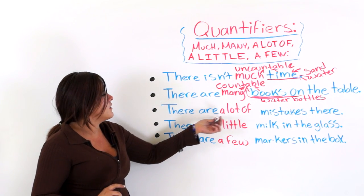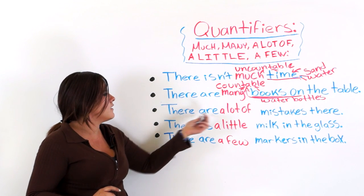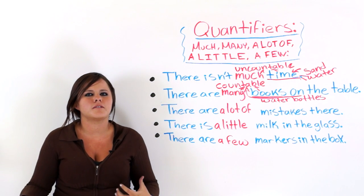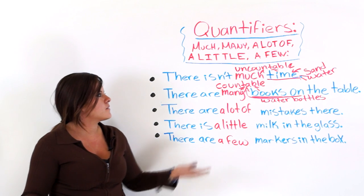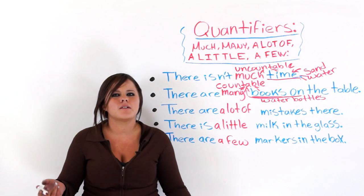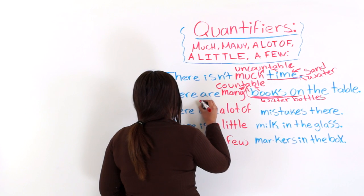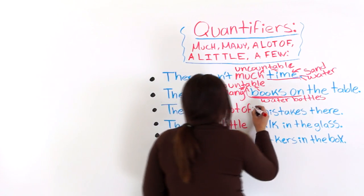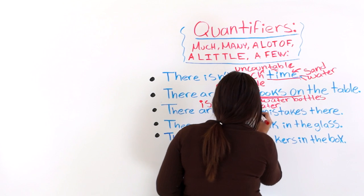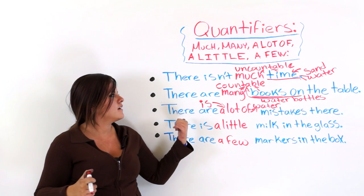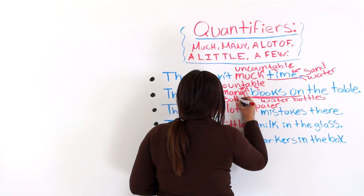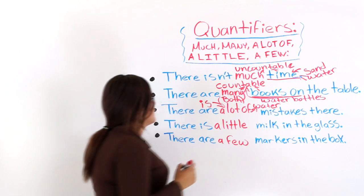There are a lot of mistakes there. A lot of is for both countable and uncountable nouns. You can say there are a lot of water bottles, or there is a lot of water. When something is uncountable, you say 'there is a lot of water.' So I'm going to write up here: both — countable and uncountable.